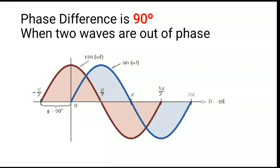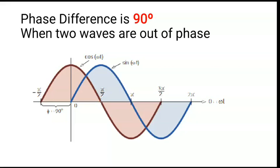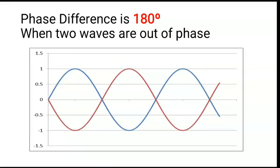If a waveform starts from the positive side it is leading, and if it starts from the negative side it is lagging. Here the brown waveform starts from the negative side compared to blue, so brown is lagging. Looking at the y-axis, brown is at the top — that is why brown is leading in this case. In the 180-degree example, it is totally opposite: blue is at the top and brown is at the bottom, so blue is leading and brown is lagging by 180 degrees.